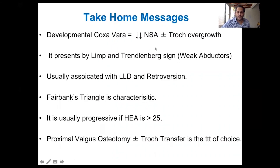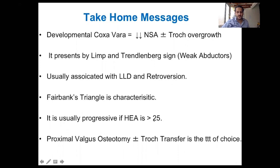The take-home messages: developmental coxa vara is a decrease in the neck shaft angle with trochanteric overgrowth. It presents with limp and Trendelenburg sign due to weak abductors, with some degree of limb discrepancy and retroversion. Fairbank's triangle is the characteristic radiological appearance. It is usually progressive if the Hilgenreiner epiphyseal angle is more than 45 degrees — the normal angle is less than 25 degrees. Management is by proximal femoral valgus osteotomy with or without trochanteric transfer according to the case.